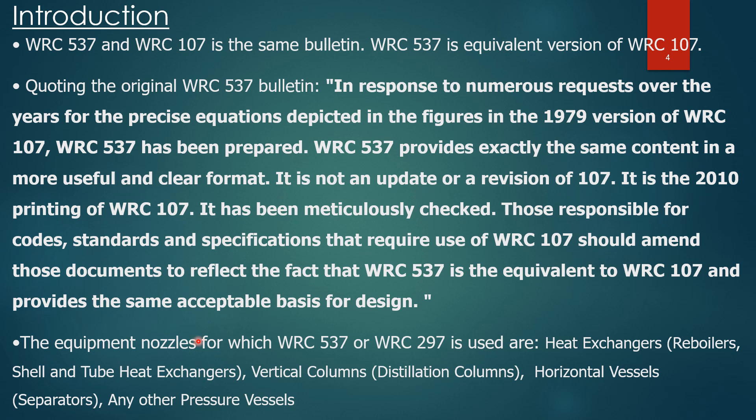The equipment nozzles for which WRC 537 or WRC 297 are used include heat exchangers such as reboilers and shell-and-tube heat exchangers, vertical columns like distillation columns and towers, horizontal vessels like separators, and any other pressure vessels that meet the applicable boundary conditions.